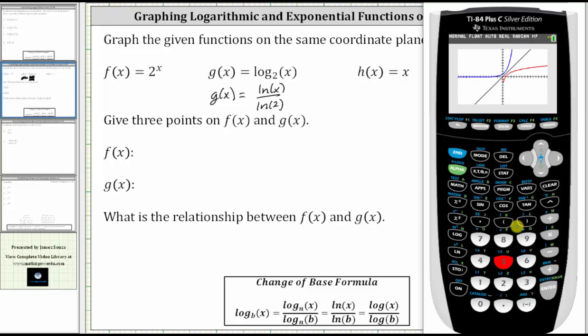One thing we might notice about f(x) and g(x) is they are symmetrical across the line y equals x, which means if we were to fold the graphs across y equals x, the two graphs would match up perfectly.